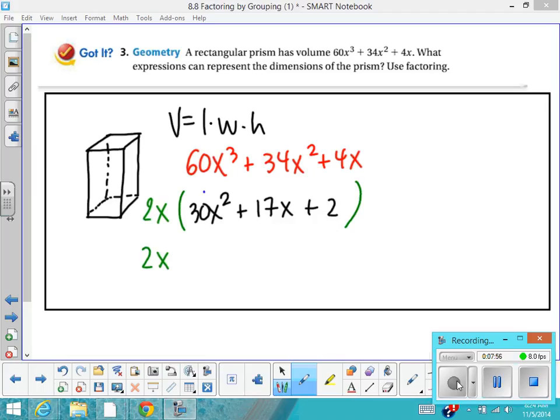The first thing you want to do is you want to multiply the a term times the c term. And some people like to make a table. And we're going to multiply to ac and add to b.